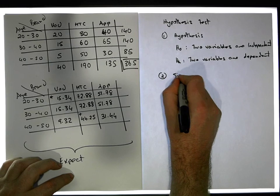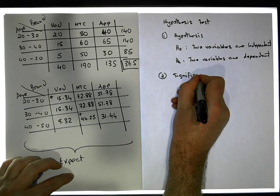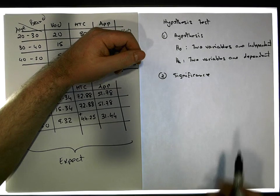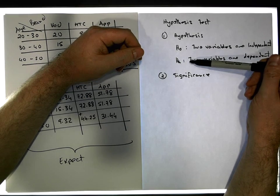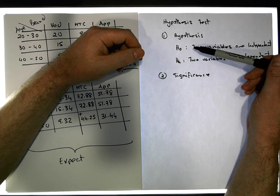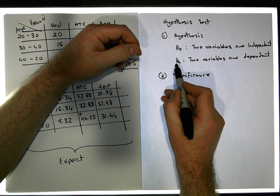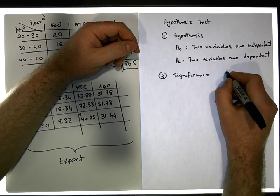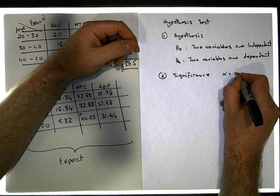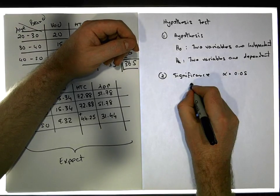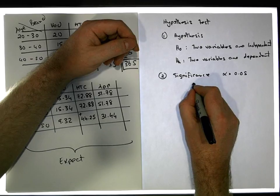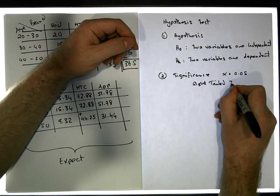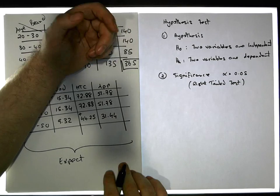Step two is the significance of our test — in other words, what probability are we willing to accept in being wrong when we reject the null hypothesis when we shouldn't have? In this case we're going to say alpha is equal to 0.05. This is a right-tailed test, and I'll explain why in a second — that's a consequence of the test statistic.